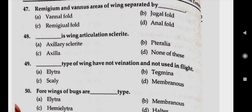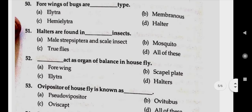Question number forty-nine: dash type of wings have no venation and are not used in flight. Answer A, elytra. Question number fifty: forewings of bugs are dash type. Answer C, elytra.